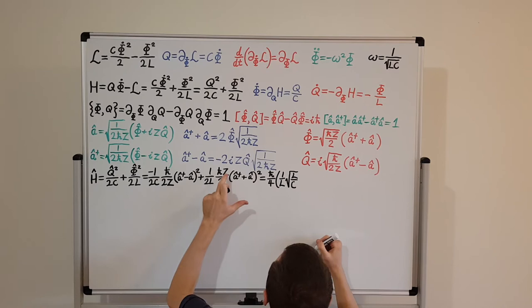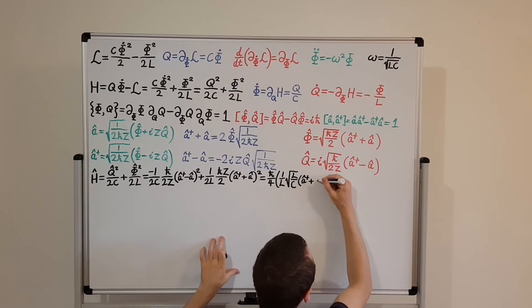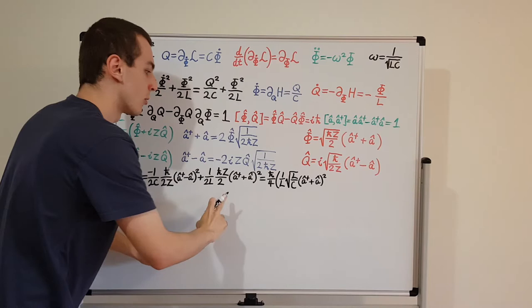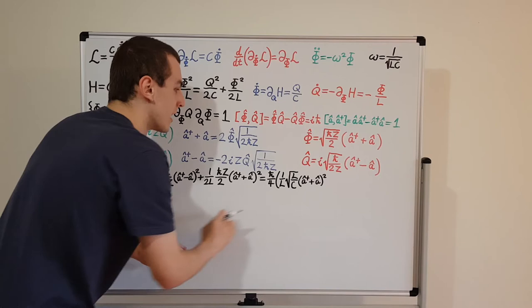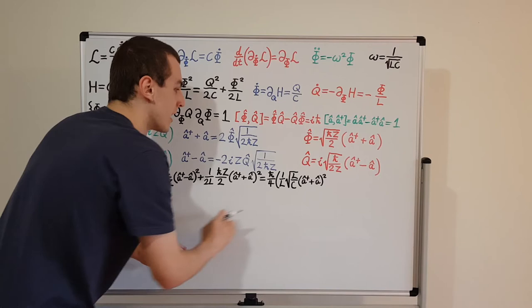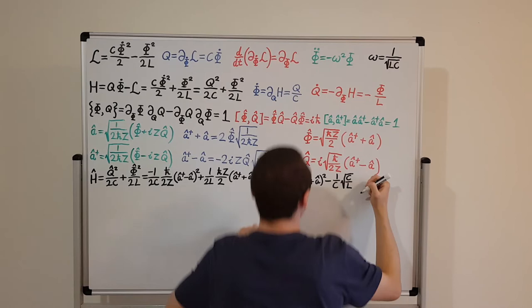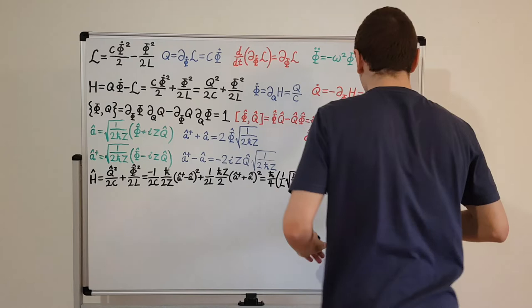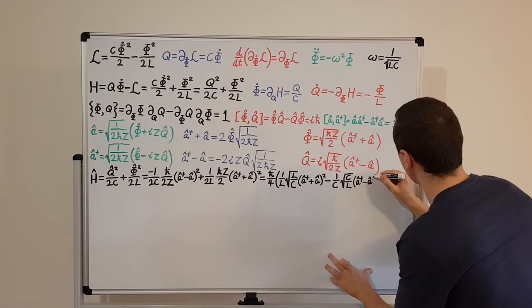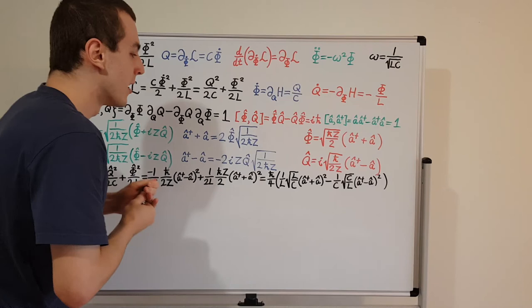Subtracting the other term: we have minus 1 over C times the reciprocal of Z, which is the square root of C over L. Over here we had the square root of L over C, and now we have the square root of C over L. Then we have the difference (a dagger minus a) squared.